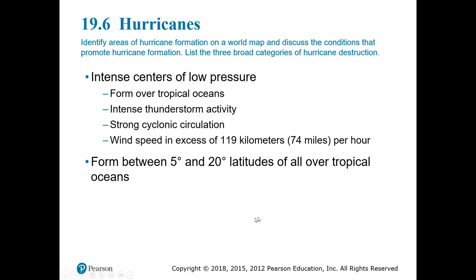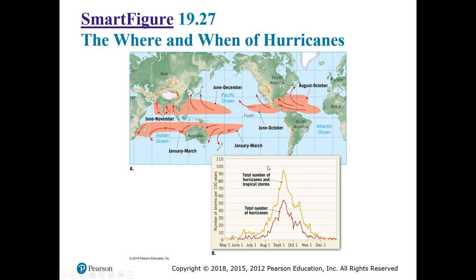Section 19.6 covers hurricanes, which are much larger storms. Wind speeds are fast but not quite as fast as tornadoes. These typically occur over tropical oceans at low latitudes, starting as tropical storms that intensify and then begin circulating in a cyclonic motion — counterclockwise in the northern hemisphere and clockwise in the southern hemisphere. We need at least 74 miles per hour wind speeds to be considered a hurricane. Hurricanes affecting North America typically start as storms off the coast of Africa and intensify over warm waters. This warm, moist water becomes the energy source for a hurricane.